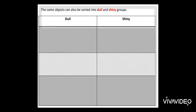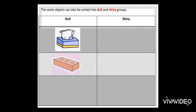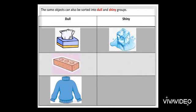So, the same objects can be sorted into dull and shiny groups. For example, dull like box of tissues and brick and wool t-shirt and shiny like ice and spoon and balloon.